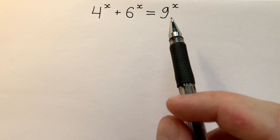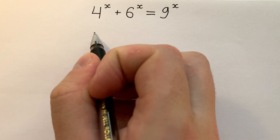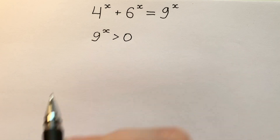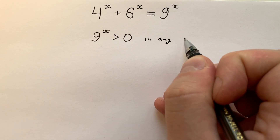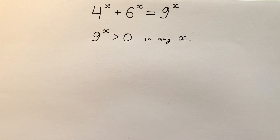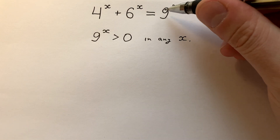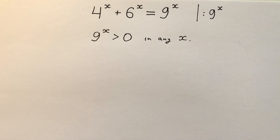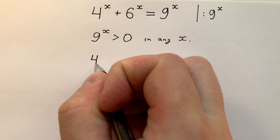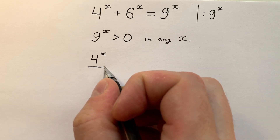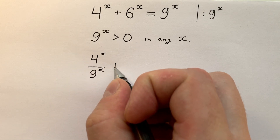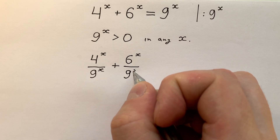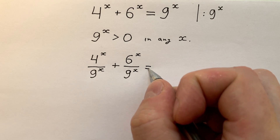What can we say about this function? We can say that 9 to the power of x is bigger than 0 for any x. In this case we can divide both sides of this equation by 9 to the power of x. And then we have 4 to the power of x divided by 9 to the power of x, plus 6 to the power of x divided by 9 to the power of x, and it equals to 1.